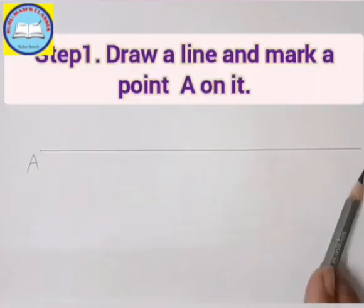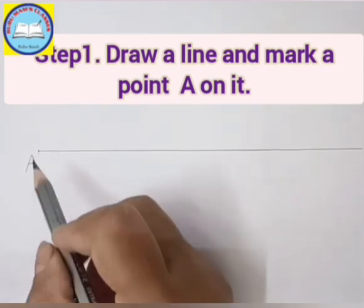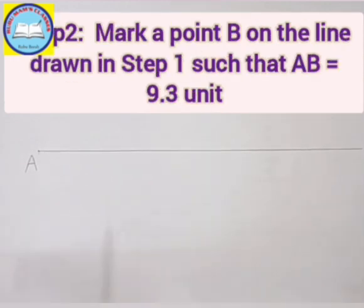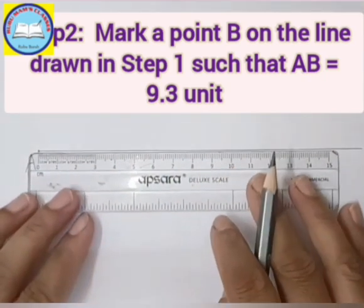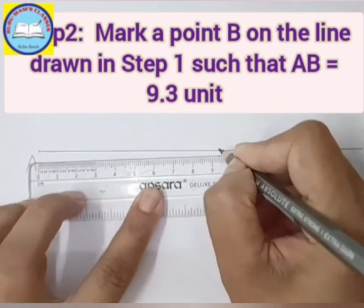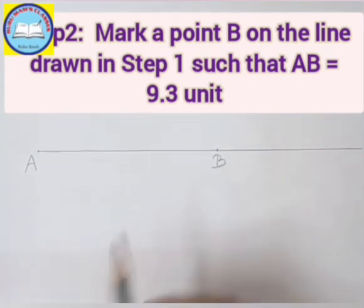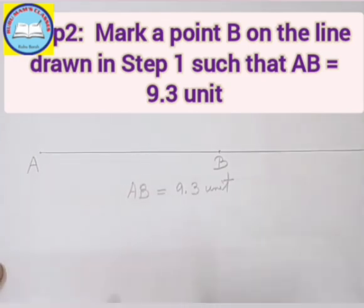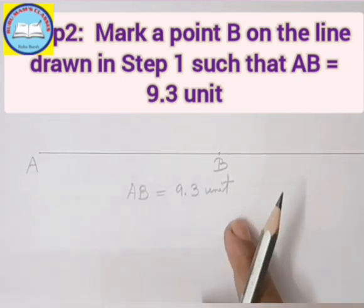First, step 1. You have to draw a line here — I have already drawn it, with starting point A marked. Step 2: you need to mark a point B at 9.3 units from A. So AB is equal to 9.3 units.